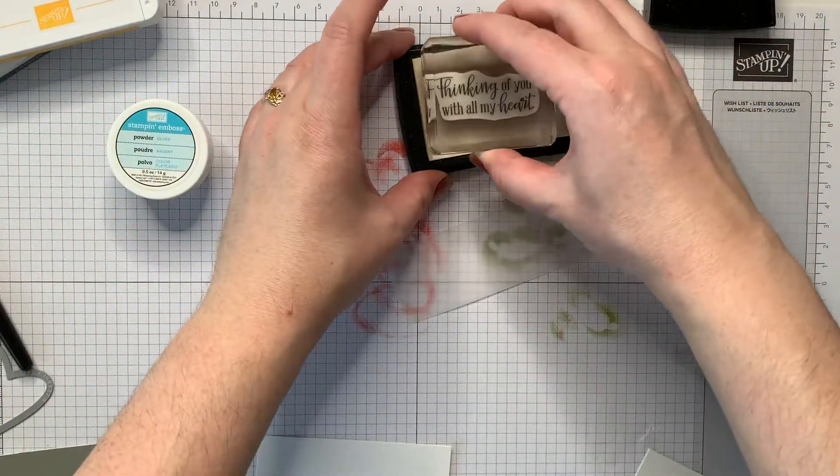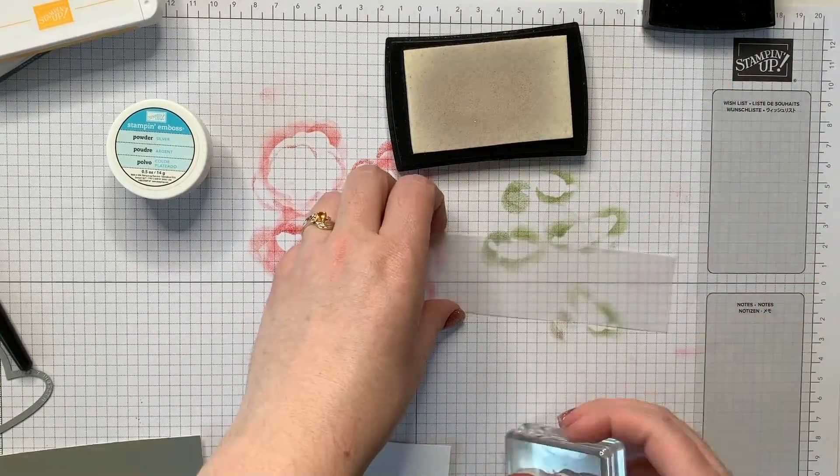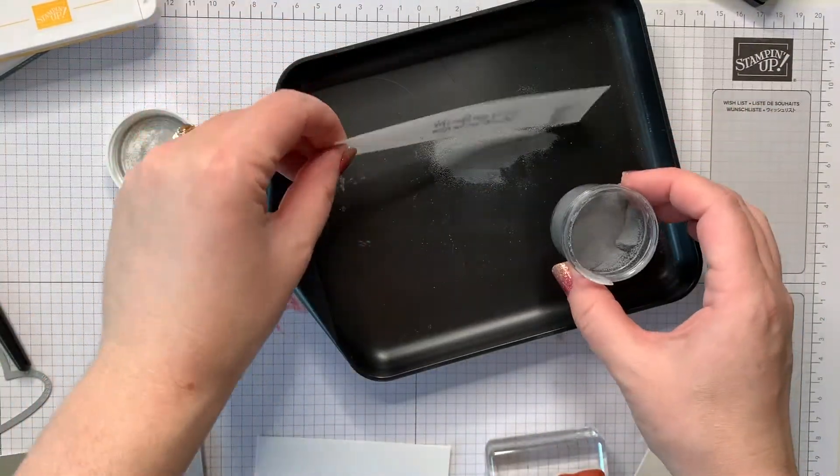I am starting by stamping on some vellum in Versamark ink and I'm going to heat emboss that with silver embossing powder.